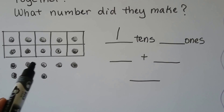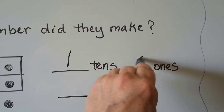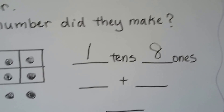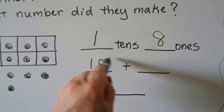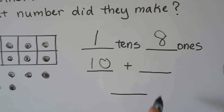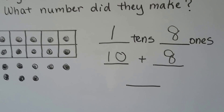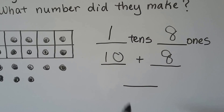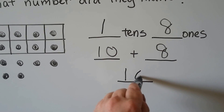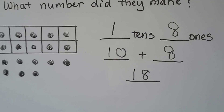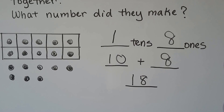And how many ones? 1, 2, 3, 4, 5, 6, 7, 8. That's a 10 plus an 8 — that's 18. We have a 1 in the tens place and an 8 in the ones place. They made 18.